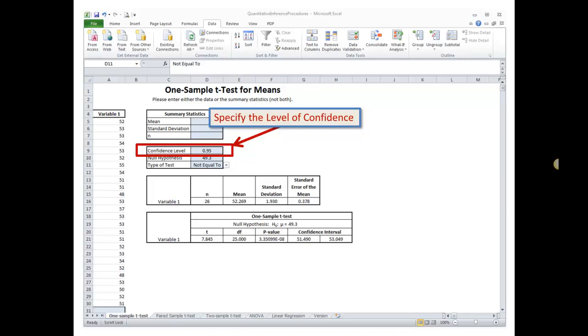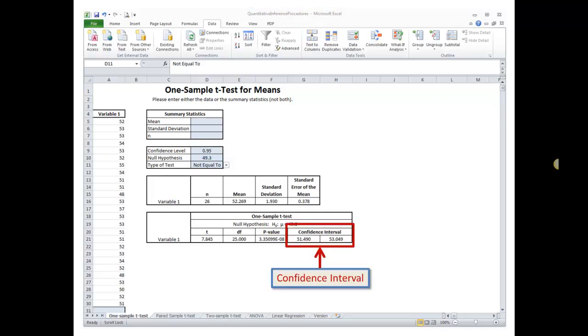Okay, so moving on to the actual construction of the confidence interval. Inside the quantitative inference procedures Excel file we've already got the data pasted in there. In order to make the confidence interval we need to specify the level of confidence that we want to have. Our original problem said we want it to be 95% confident, so for our confidence level we put in .95. And that's it. Then it just gives us the confidence interval right down there at the bottom.